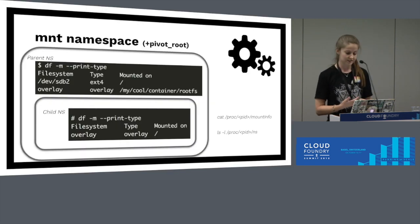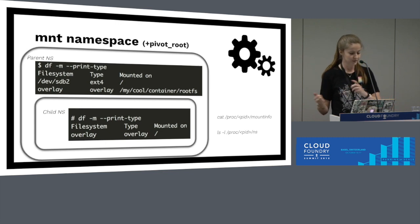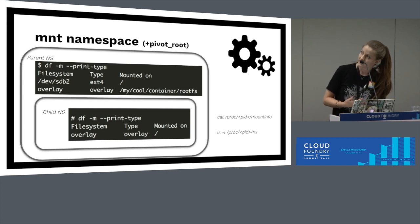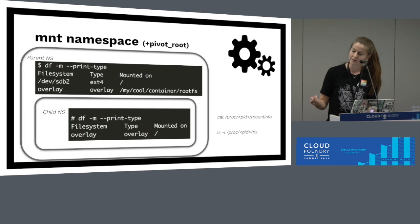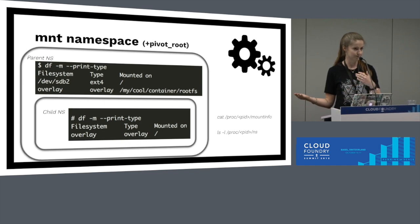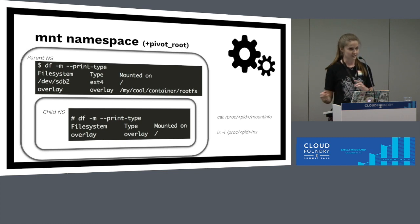The next one is the mount namespace. Processes placed in a new mount namespace have a different view of the mount table. When we use pivot_root at the same time, that process will see something different mounted at slash — its root filesystem. You can use df with the print-type option to see filesystem mounts. To see what namespace your PID is running in, you'd do ls -l /proc/[pid]/ns, and those links give you the namespace IDs for the namespaces your process is running in.